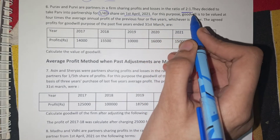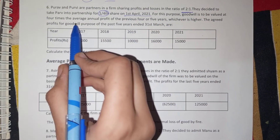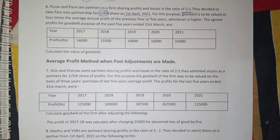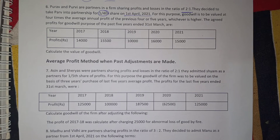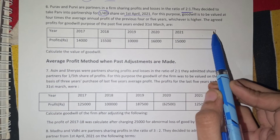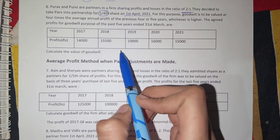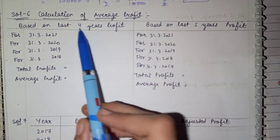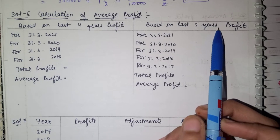The purpose of goodwill is to value it at 4 times the average annual profit of the previous 4 or 5 years. When it says 4 or 5 years, we take whichever average profit is higher — previous 4 years or previous 5 years. Let's calculate the average profit for both 4 years and 5 years of profit.